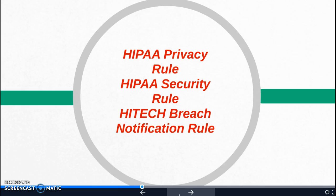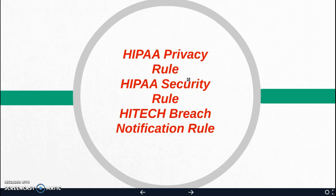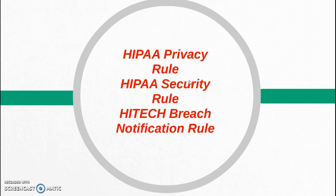There are some exceptions to the usual rules for how protected health information can be released. These may include subpoenas for court cases, workers' compensation cases, statutory reports where criminal activity is involved such as rape or child abuse or neglect, research cases under certain circumstances, and self-pay requests for restriction — where an uninsured patient can request that their protected health information be restricted for certain reasons.